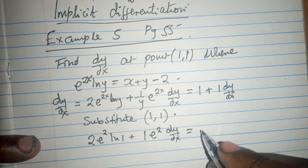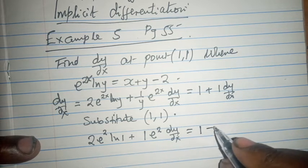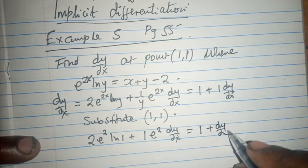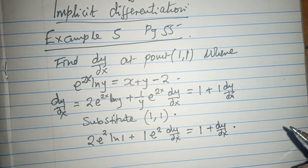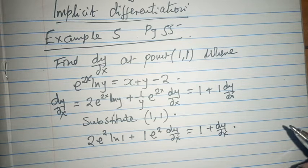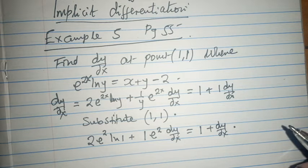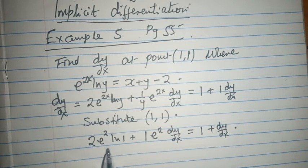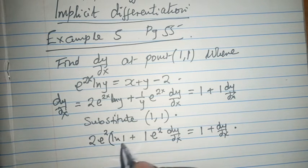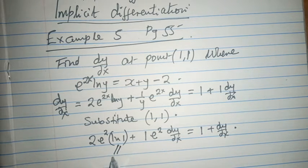So it's equal to 1 plus dy/dx. We realize that when x equals 1 and y equals 1, the whole of this one becomes 0 because ln 1 is 0.